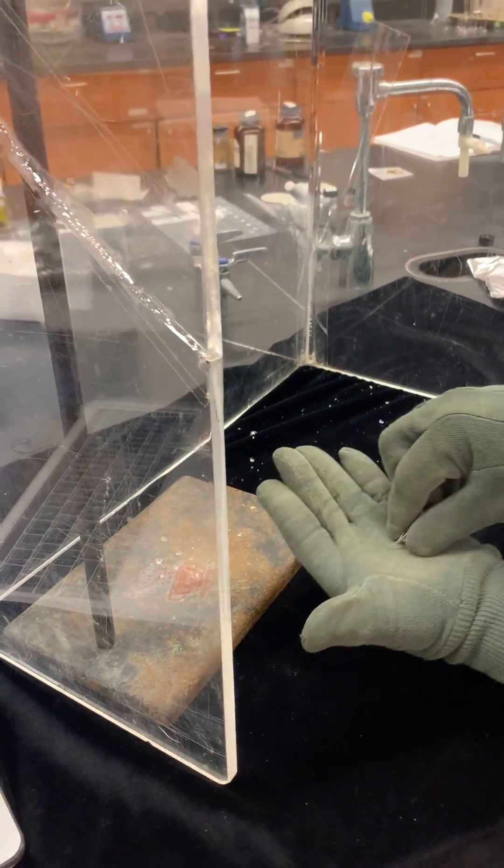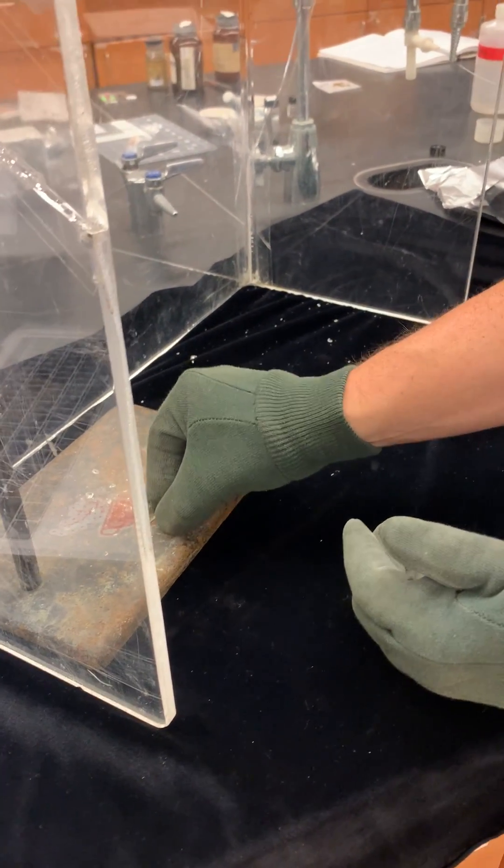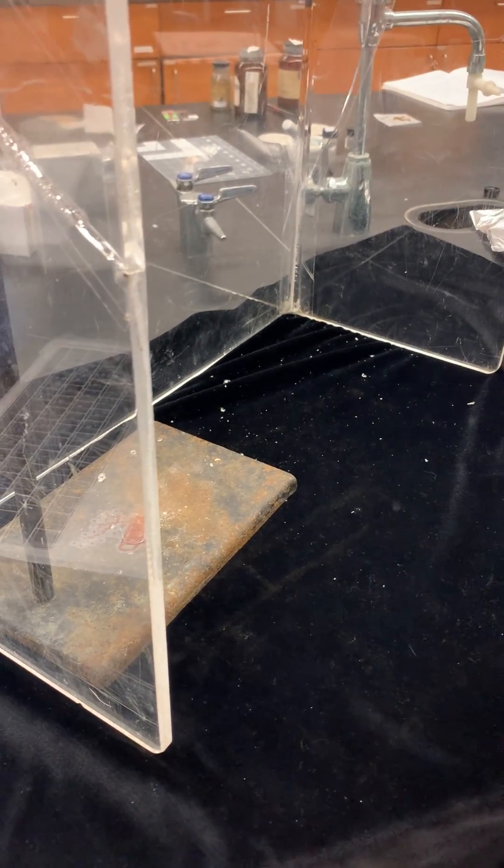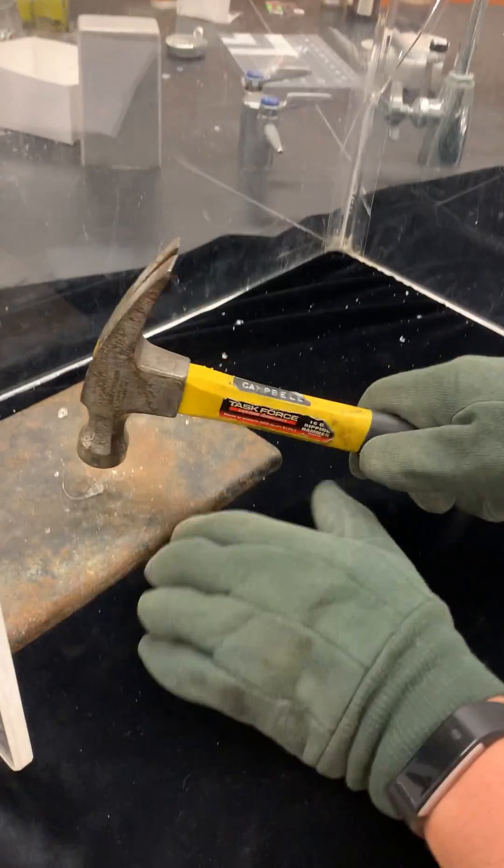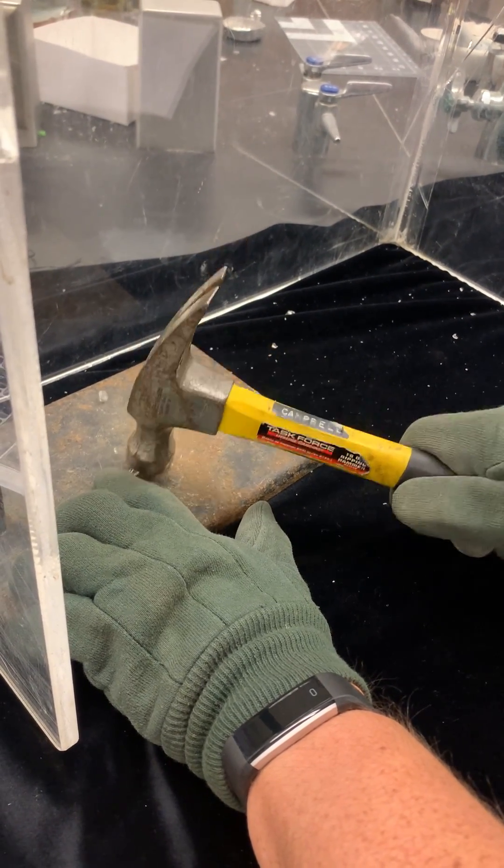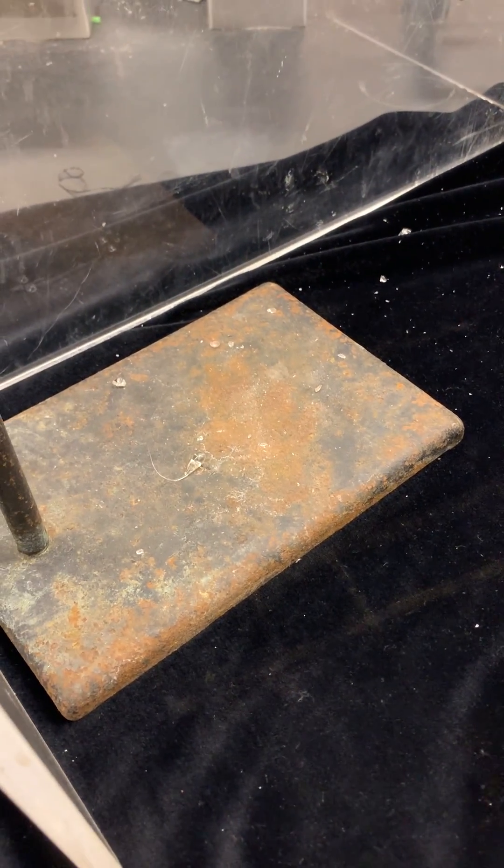But as you hammer the Rupert drop, as shown here, there's the head and the little tail. Let's see what happens when we hammer the head. As you can see, that glass does not break.